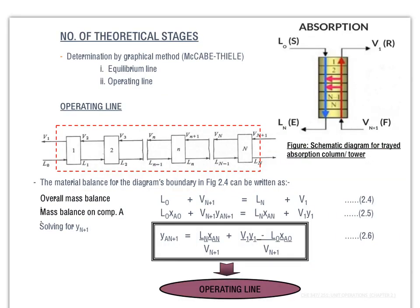These are the steps involved in calculating the theoretical stages for the absorption column. Before we can determine the number of theoretical stages, we need to determine the equilibrium line and operating line for the given case. We are going to solve it using the graphical method.